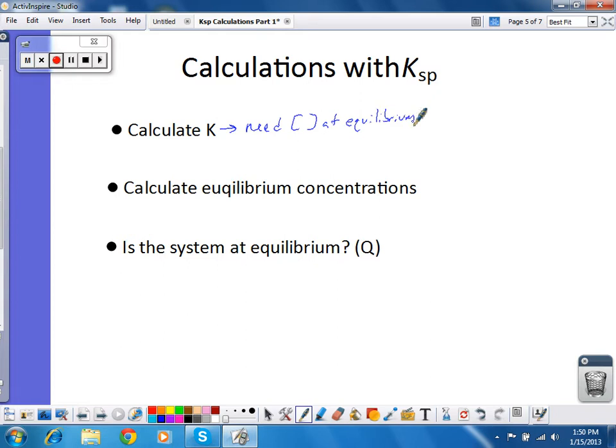Now, when you're given these concentrations, it's not just going to say the concentration of this ion or that ion. What it's going to say in the problem is the solubility of compound X is blank moles per liter. That would be molar solubility. And that's the information you need to calculate your K.